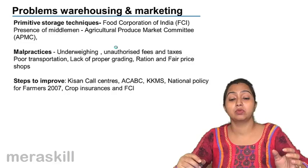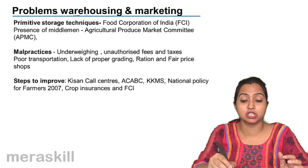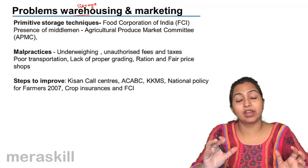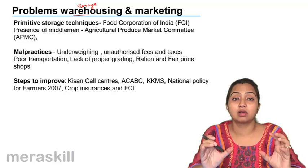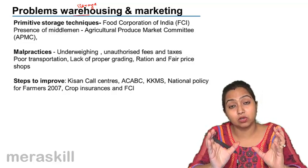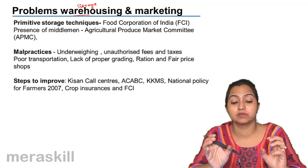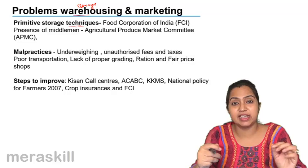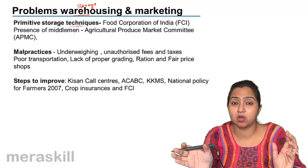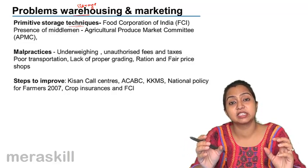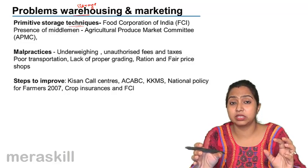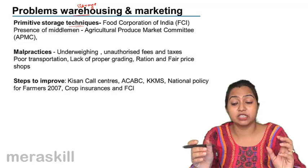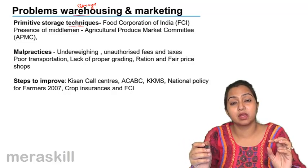A major problem is warehousing and marketing. Nearly 10–15% of produce gets destroyed due to poor storage facilities. Farmers still use primitive storage techniques — putting produce in digs and holes or storing it in kaccha houses on their farms — causing crops to be eaten by rats or get wet from rain, dew, or winter fog.